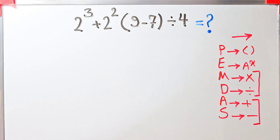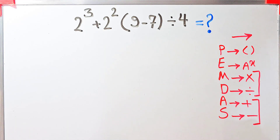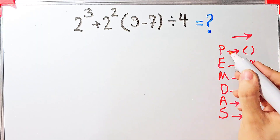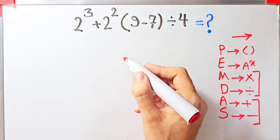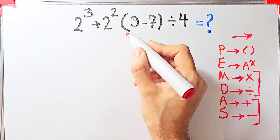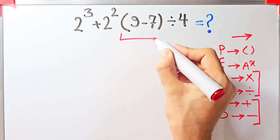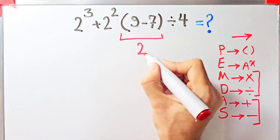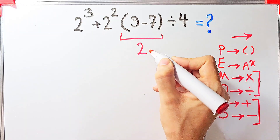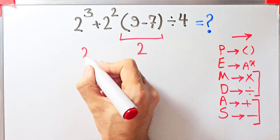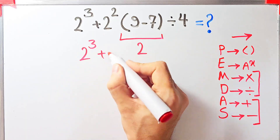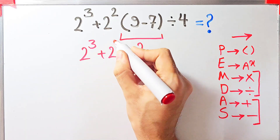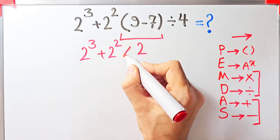According to the PEMDAS rule, first we simplify the parentheses. Inside the parentheses we have 9 minus 7, which equals 2. Now we have: 2 to the power of 3, plus 2 to the power of 2, times 2, divided by 4.